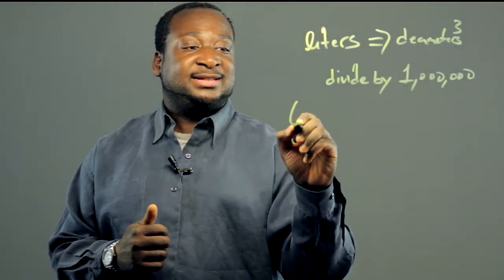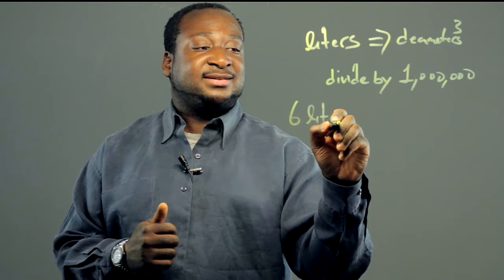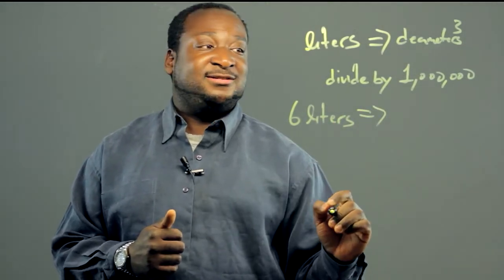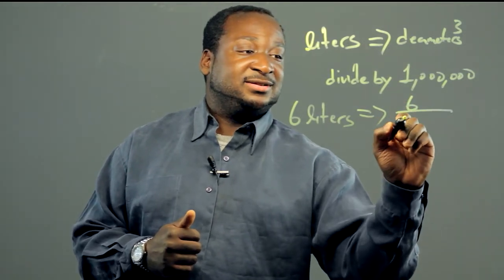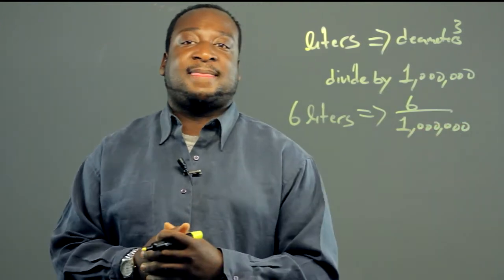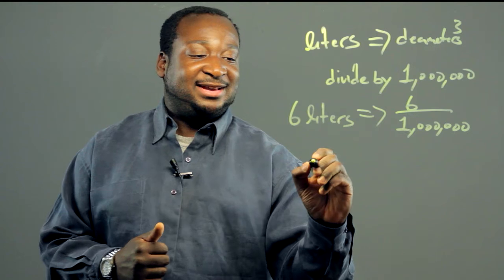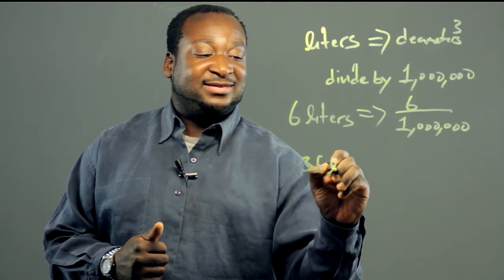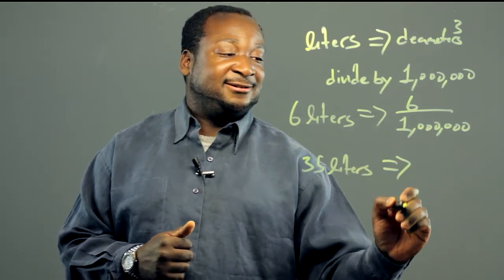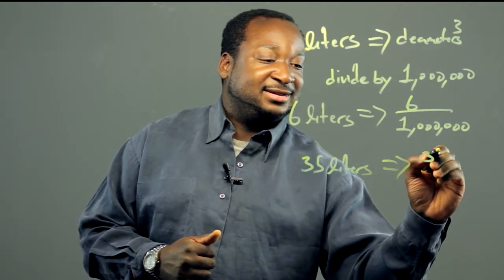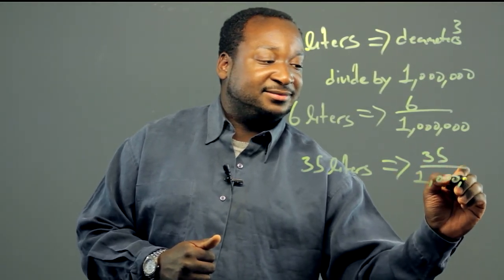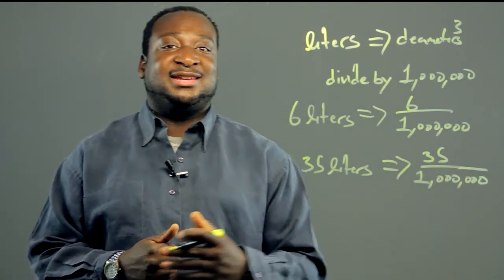If you have six liters, this number in decameters cubed is going to be six over one million. This works with any number. If you have 35 liters, this in decameters cubed is equivalent to 35 over one million. And there's a conversion.